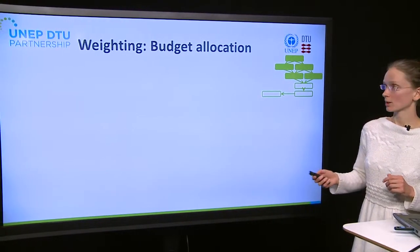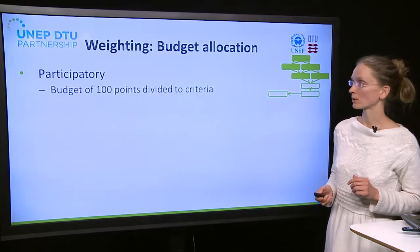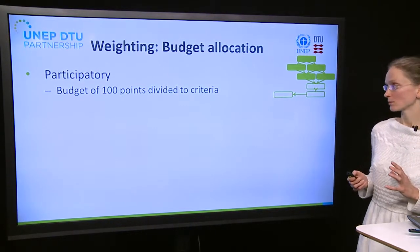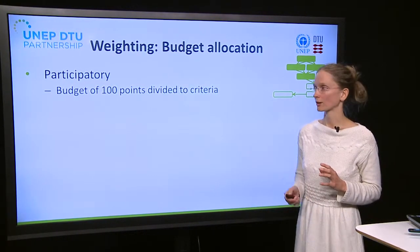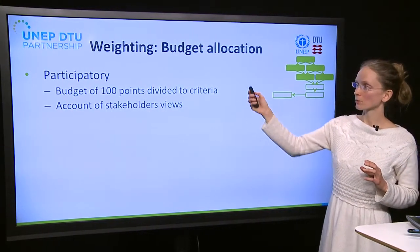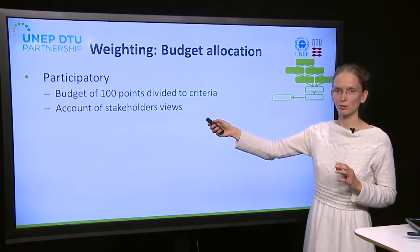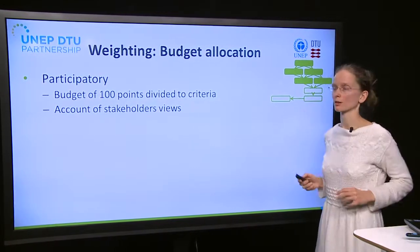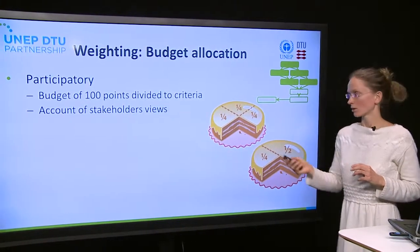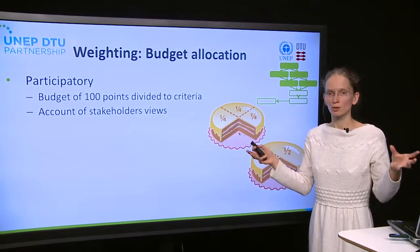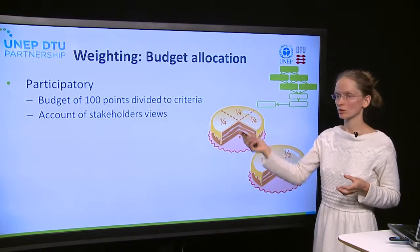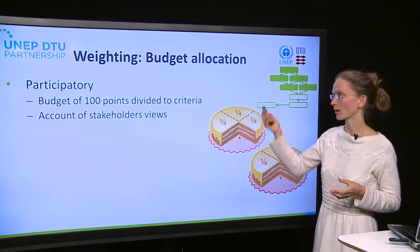A little bit about the budget allocation method. It is a participatory method and, as the name says, it involves allocating a budget of 100 points divided among all the different criteria. The idea is that the way these 100 points are divided should account for stakeholder views and their opinions on the different criteria. You can compare it to sharing a cake — you have a cake and you want to split it among the different criteria, discussing how much of the cake to provide to each.